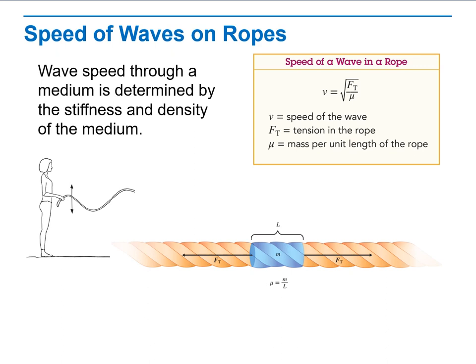Now, what is the speed of a wave? The equation that we'll be using is equal to radical tension in the rope, F tension, divided by mass per unit length of the rope.